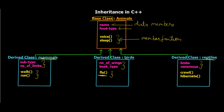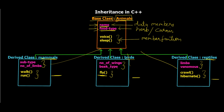Reptiles have two data members unique to them — for example, a reptile is venomous but birds and mammals usually are not. Name and food type are common to all three derived classes because every animal has a name and eats something. These are declared in the base class and inherited automatically. Similarly, every animal communicates in some way and sleeps, so those member functions are also common and inherited by all three derived classes.